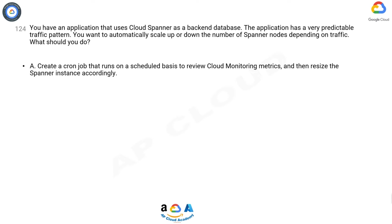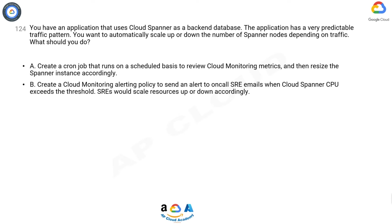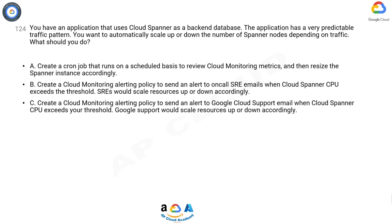Option A: Create a cron job that runs on a scheduled basis to review Cloud Monitoring metrics and then resize the Spanner instance accordingly. Option B: Create a Cloud Monitoring alerting policy to send an alert to on-call SRE emails when Cloud Spanner CPU exceeds the threshold; SREs would scale resources up or down accordingly.